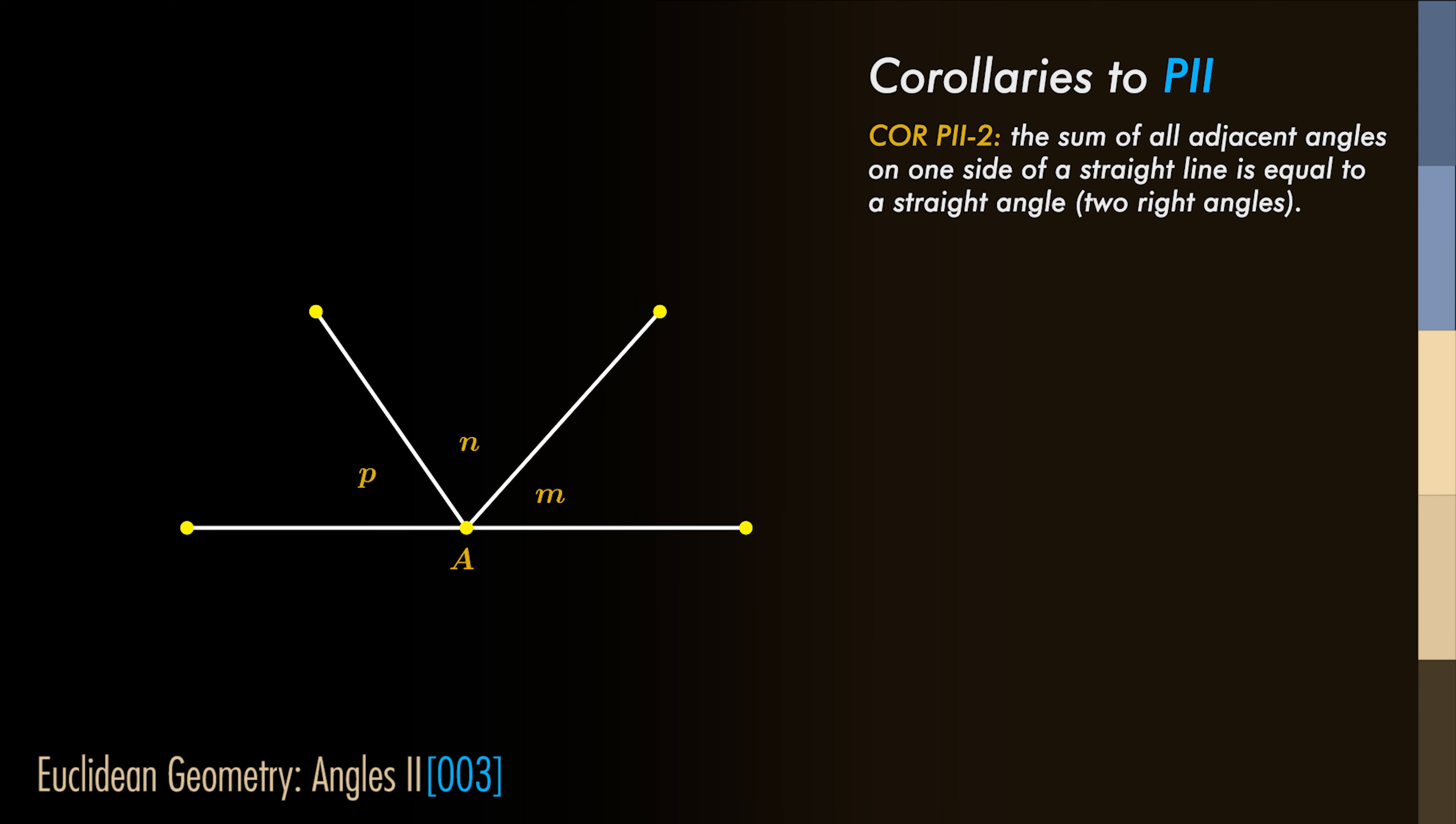Secondly, the sum of all adjacent angles on one side of a line is equal to a straight angle.